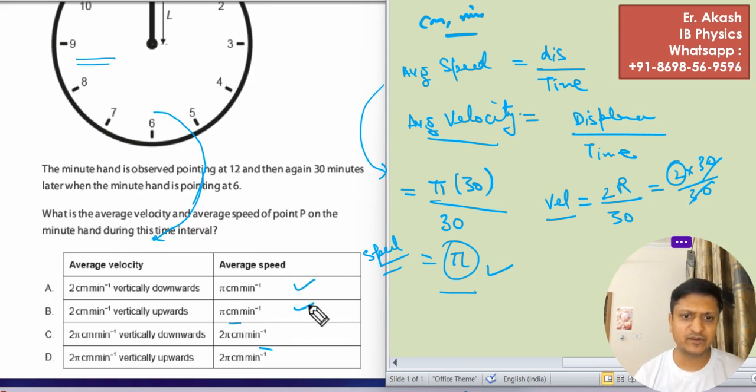So there are two options given to us. One is for downwards and one is for upwards. So we have to see which option is right.